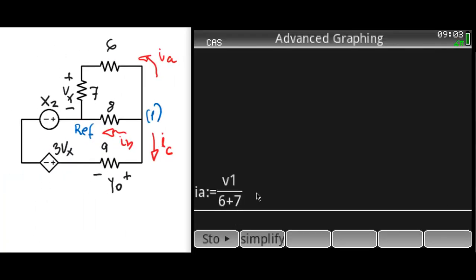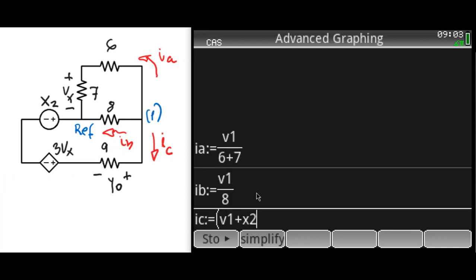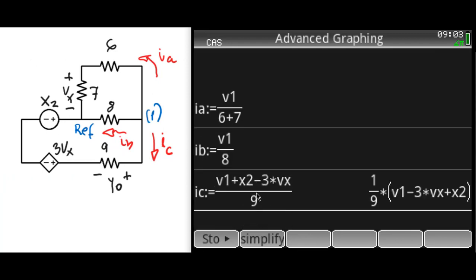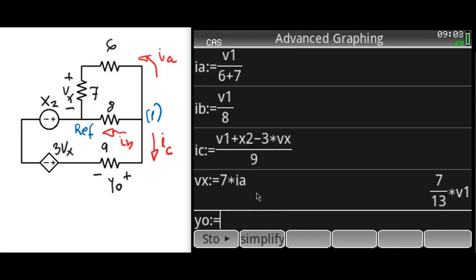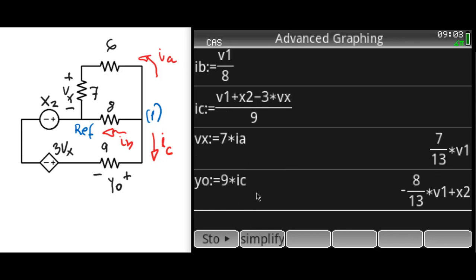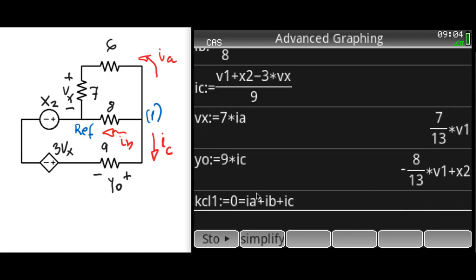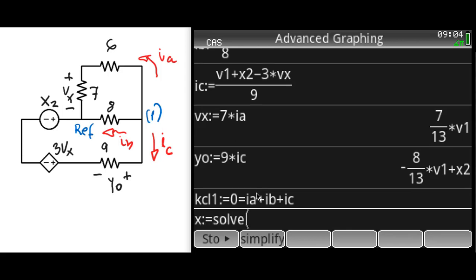We define currents Ia, Ib, Ic, the voltage Vx that controls the dependent source 3Vx, and the output Y0. Now we can write the KCL equation for node number one: currents going in zero, currents coming out Ia plus Ib plus Ic. Solve for V1.